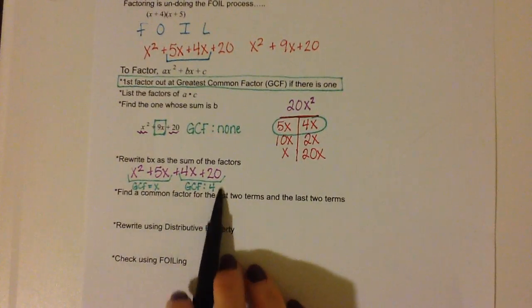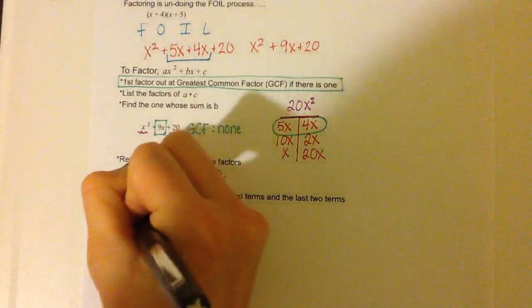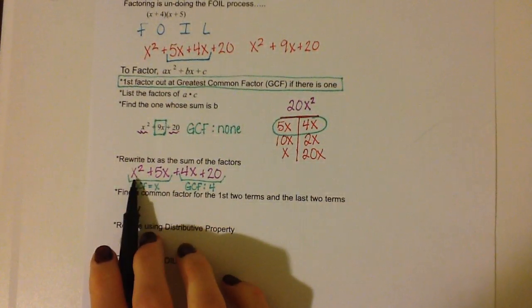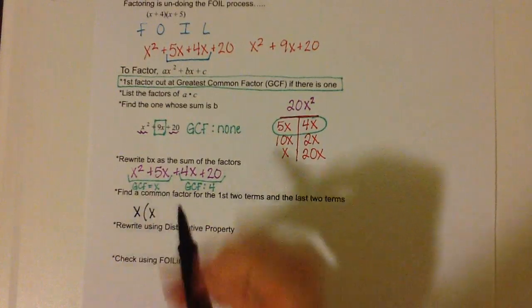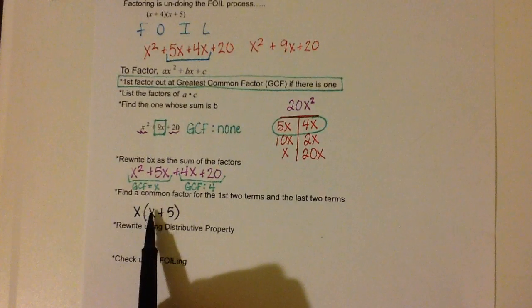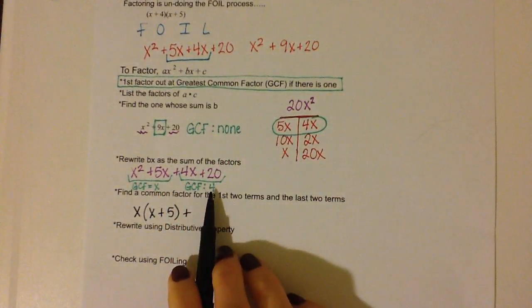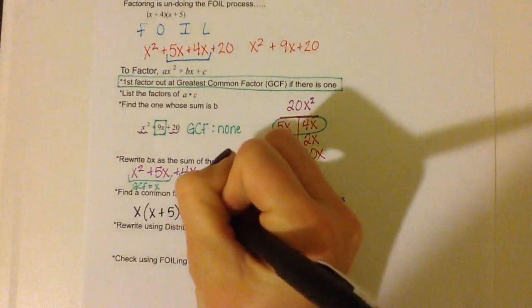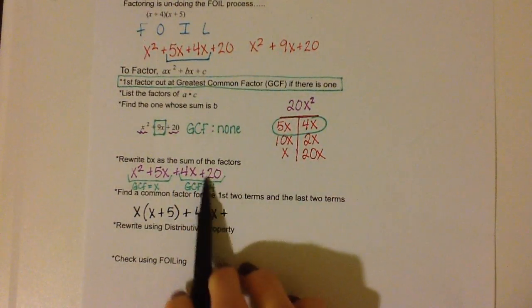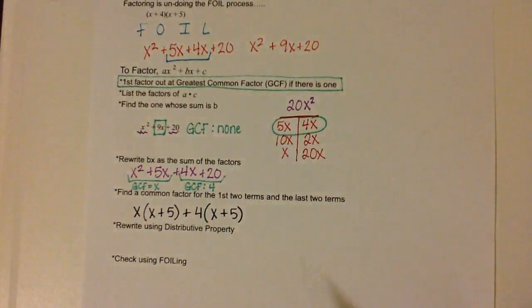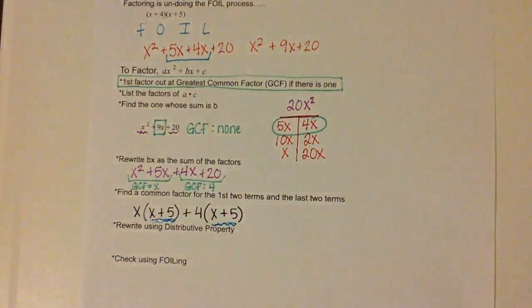Find a common factor for the first two terms and the last two terms. The first two terms have a common factor of x; the last two have a common factor of 4. We're going to rewrite using the distributive property: x times (x plus 5), plus 4 times (x plus 5). So x times x is x squared, plus x times 5 is 5x, plus 4 times x is 4x, plus 4 times 5 is 20. As you can see, these two binomials are the same, which is what we want.